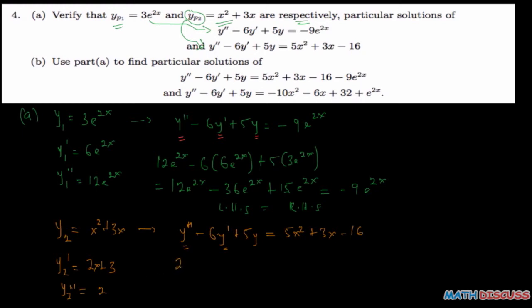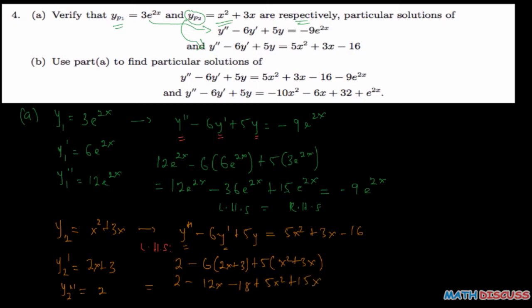We'll make the substitution. We have y'' which is 2, minus 6 times y prime which is 2x plus 3, plus 5 times y which is x squared plus 3x. We are working with the left hand side. So that gives us 2 minus 12x minus 18 plus 5x squared plus 15x. Collecting like terms, we have 5x squared first, then 15x minus 12x which is plus 3x, and then 2 minus 18 which is negative 16.